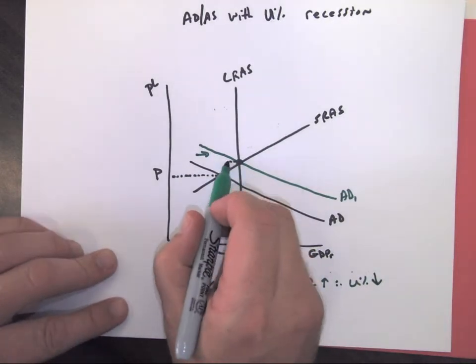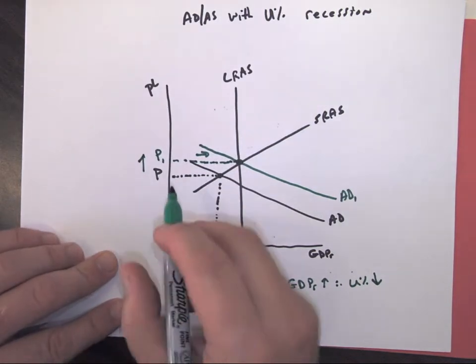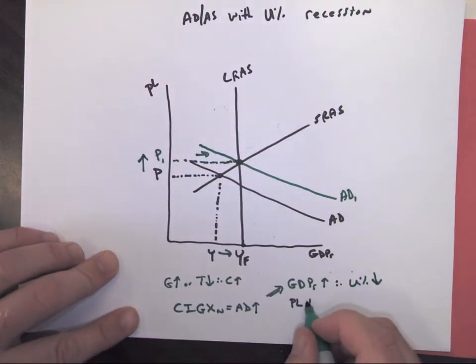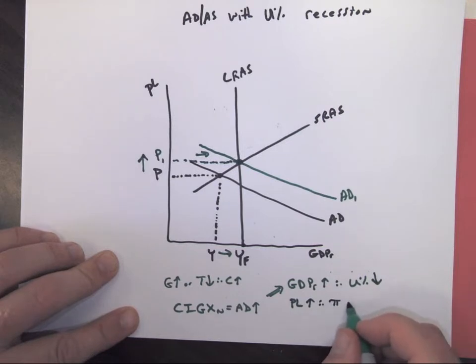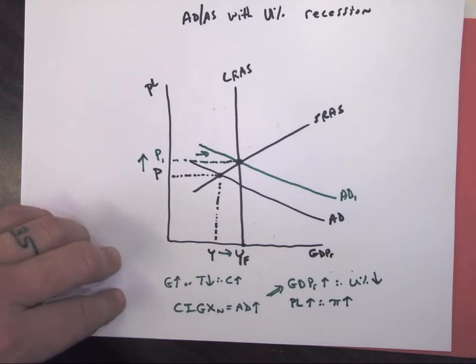However, notice where they're crossing. It's at a higher price level. So prices have now increased. So it causes our price levels to go up. And therefore, inflation is going to go up. Unfortunately, that's a side effect of this type of policy.